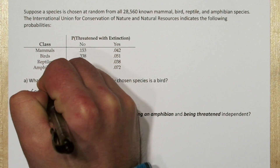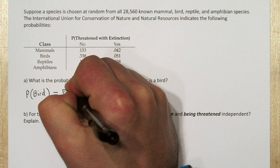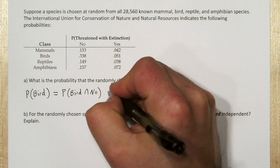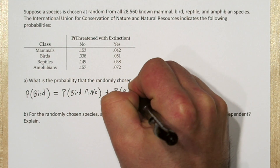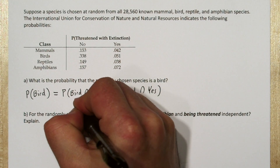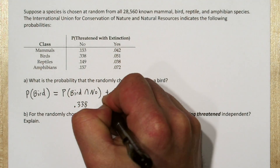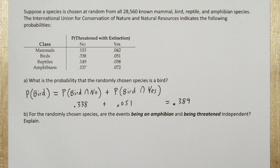For any class of animals in this table, they can either be threatened with extinction or not. So to figure out the total probability of a randomly chosen species being a bird, we need to add up the probability of the bird not being threatened with extinction and being threatened with extinction. So we get the probability the randomly selected species is a bird is 0.389.